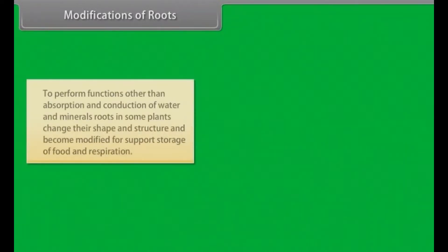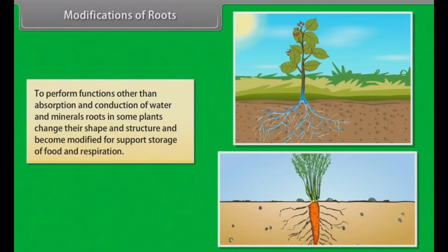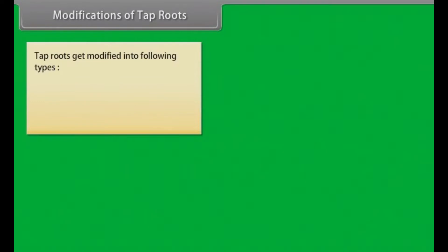Modifications of roots: To perform functions other than absorption and conduction of water and minerals, roots in some plants change their shape and structure and become modified for support, storage of food, and respiration. Tap roots get modified into the following types.